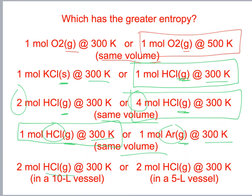Two moles of HCl gas in a 10-liter container vs. two moles of HCl in a 5-liter container, both at 300 K: the 10-liter container has greater entropy. As volume increases, entropy increases because the gas is less ordered in a bigger space.